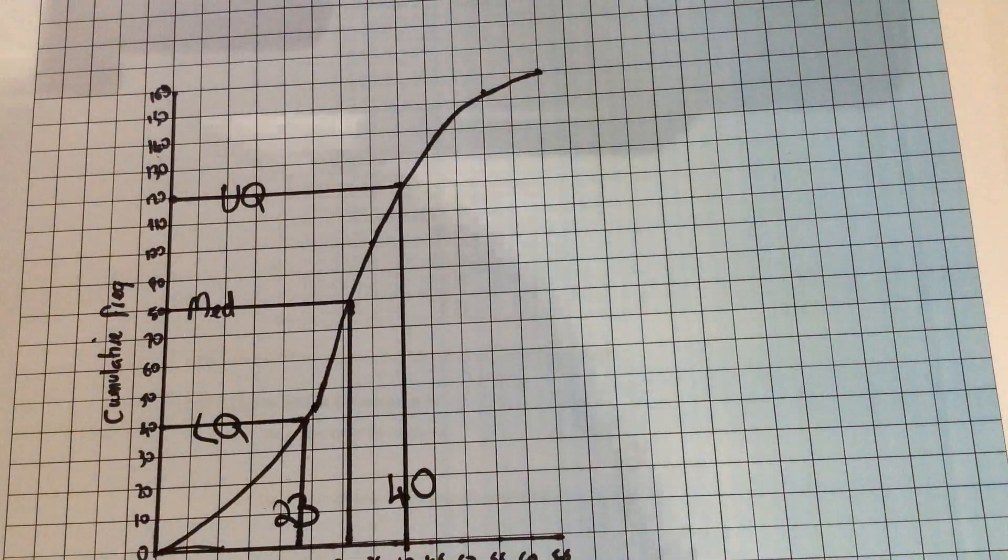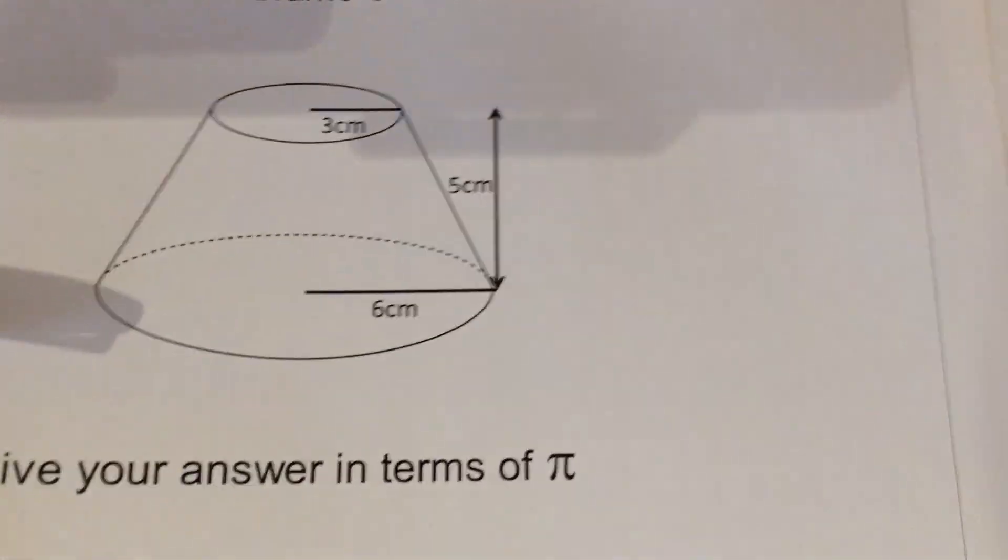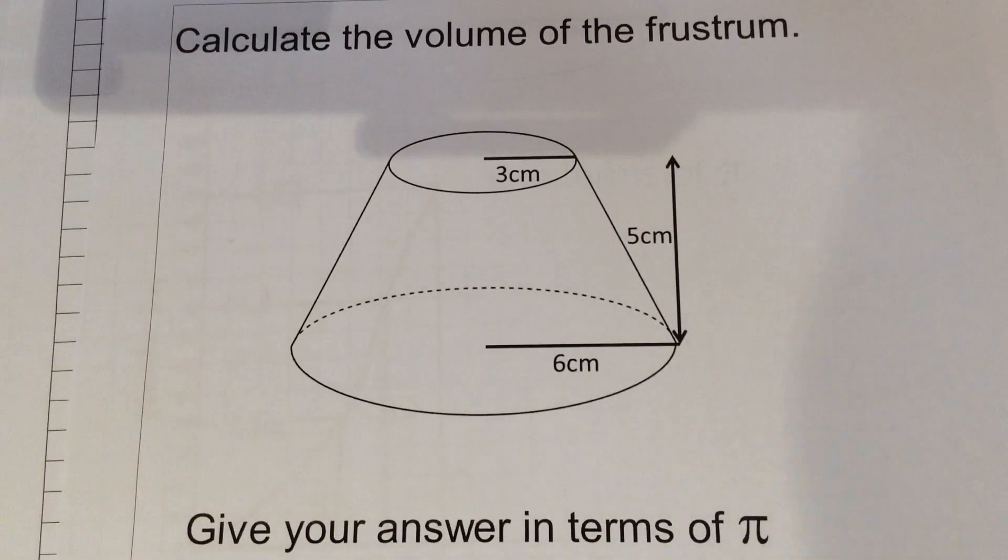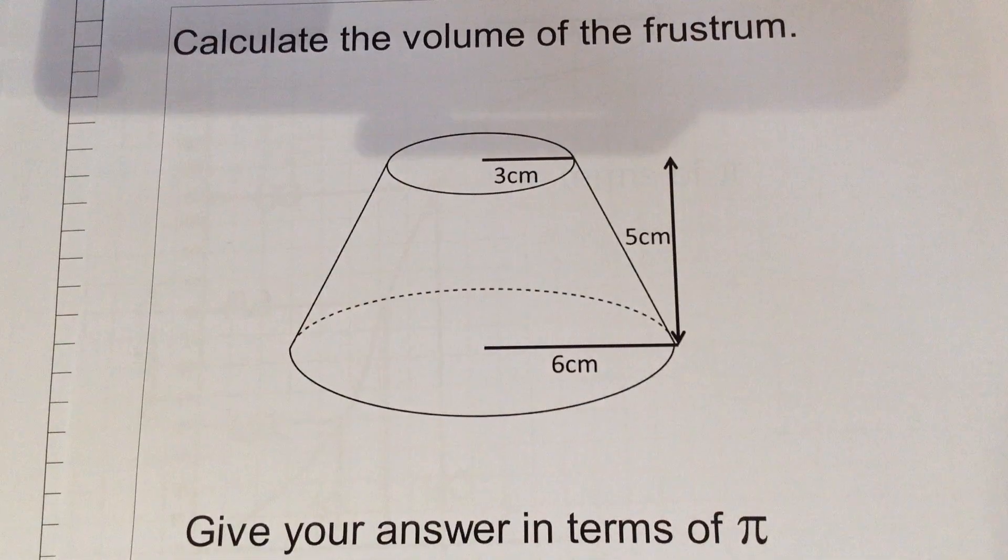The next topic we're going to look at is volumes of shapes. Now the question we've decided to go through in the video is all to do with this: a frustum. Now a frustum is basically a truncated cone. It's a cone with a little bit of the top of the cone cut off.